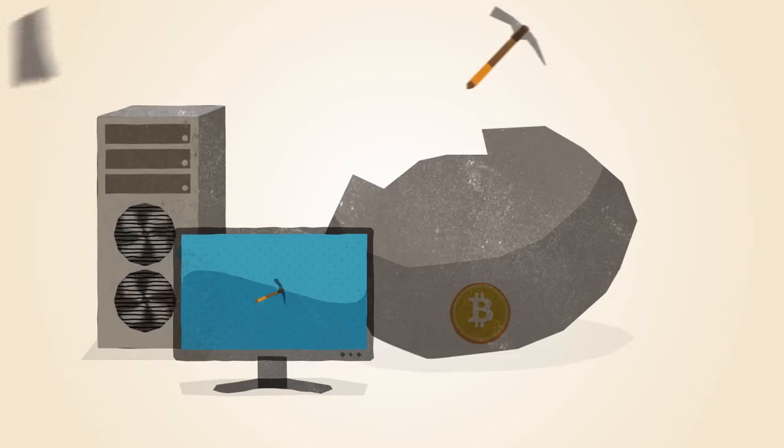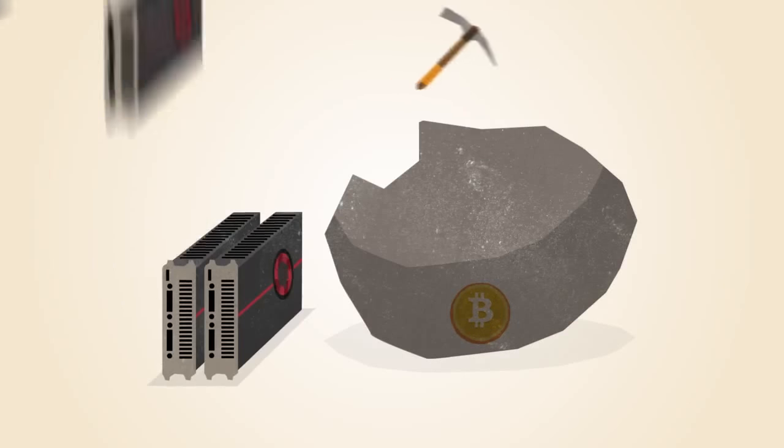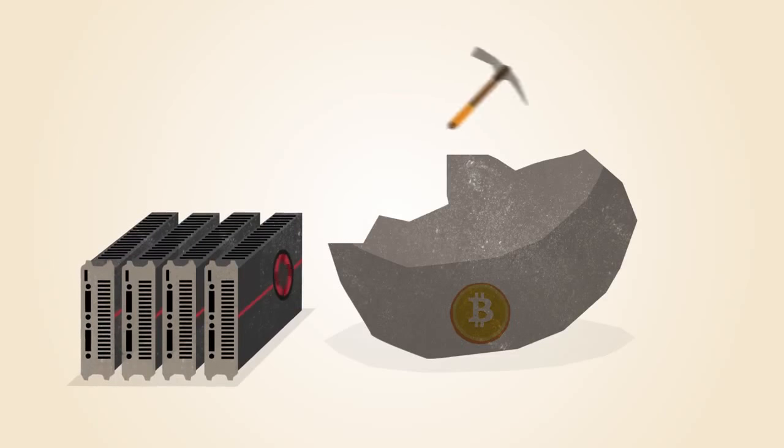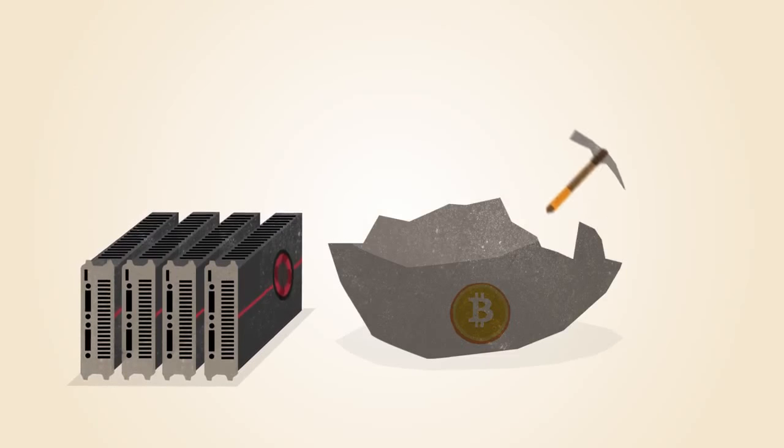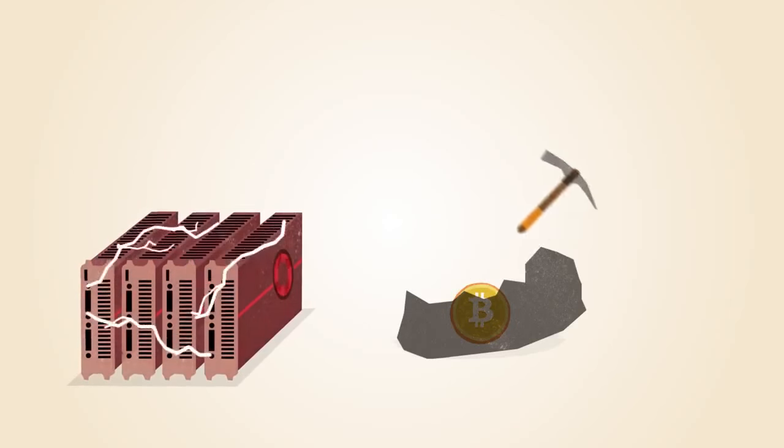In the early days, Bitcoin miners solved these math problems with the processors in their computers. Soon, miners discovered that graphics cards used for gaming were much better suited to this kind of math. Graphics cards are faster, but they use more electricity and generate a lot of heat.